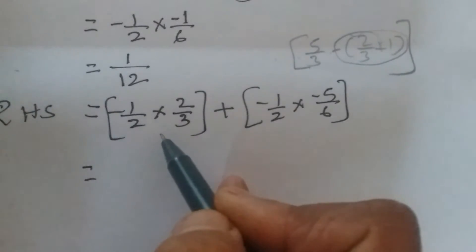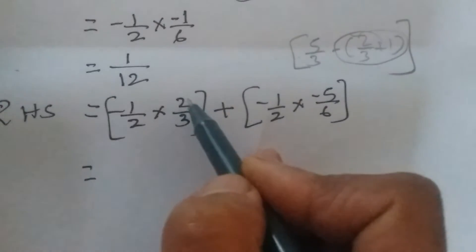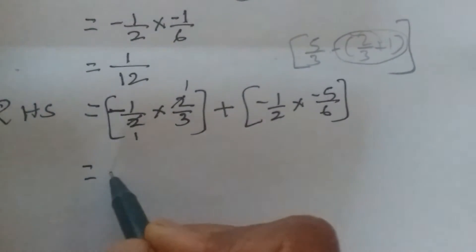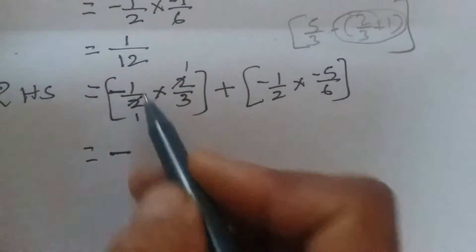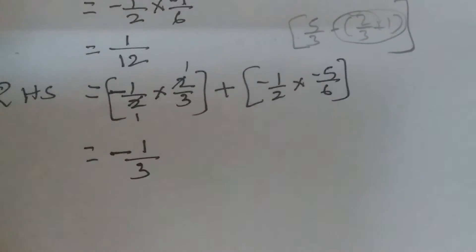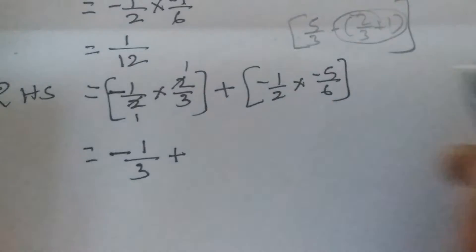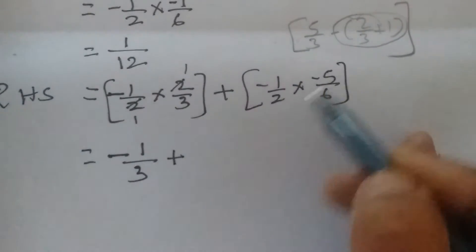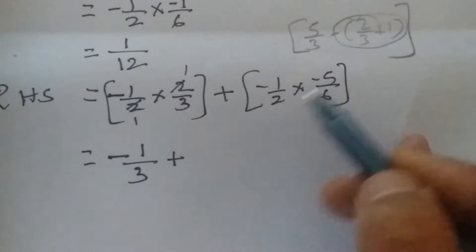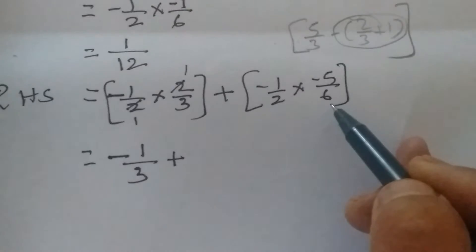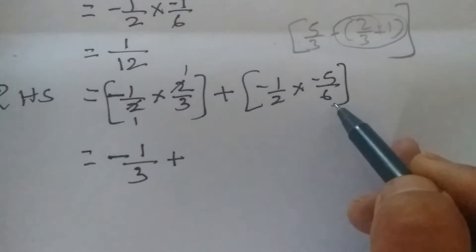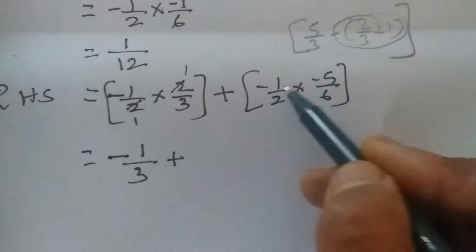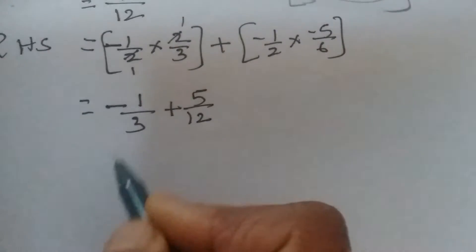For the first bracket, −1/2 × 2/3: check for common factors — both have 2, so cancel. One negative sign remains, giving −1/3. For the second bracket, −1/2 × (−5/6): no common factors to cancel. Multiply numerators: 1 × 5 = 5. Multiply denominators: 2 × 6 = 12. Minus × minus = plus, so the second bracket gives +5/12.